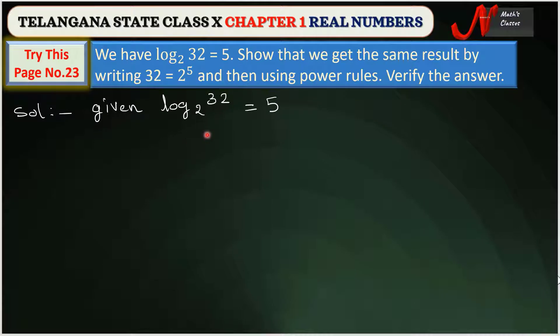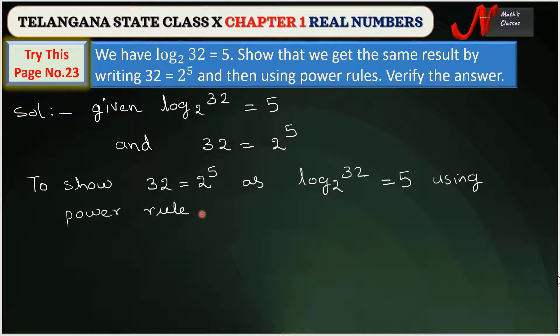From the given problem, we write log₂32 = 5 and 32 = 2⁵. This is given. Next, to show 32 = 2⁵ as log₂32 = 5 using the power rule.